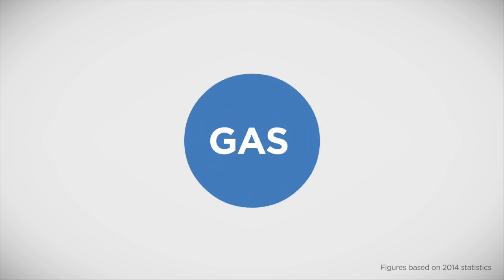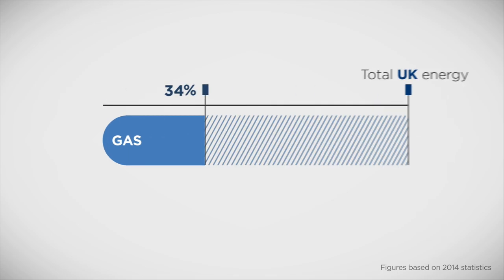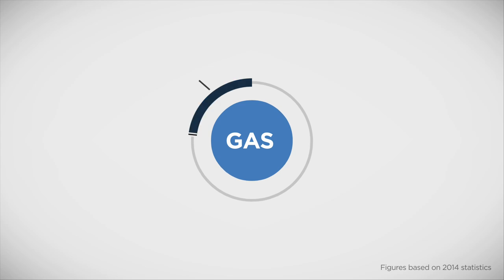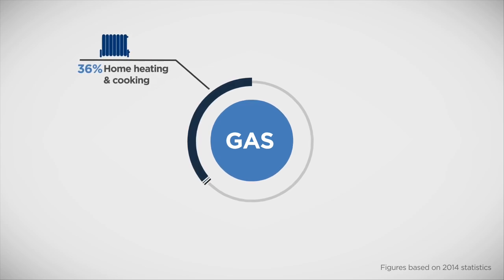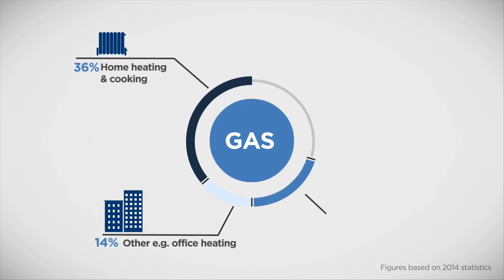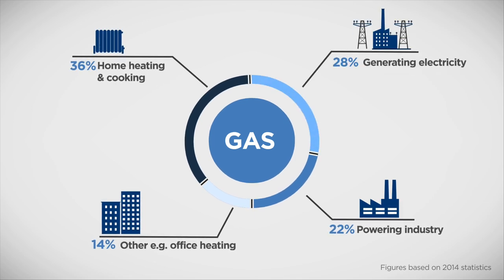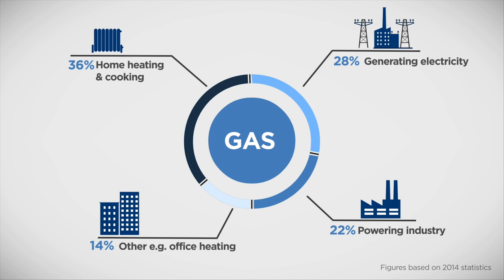Natural gas is another major source. It also provides roughly one third of our energy. 36% is piped into our homes for heating and cooking. 14% is used in other ways, like heating offices. 22% powers our industry. And power stations convert around 28% into electricity.